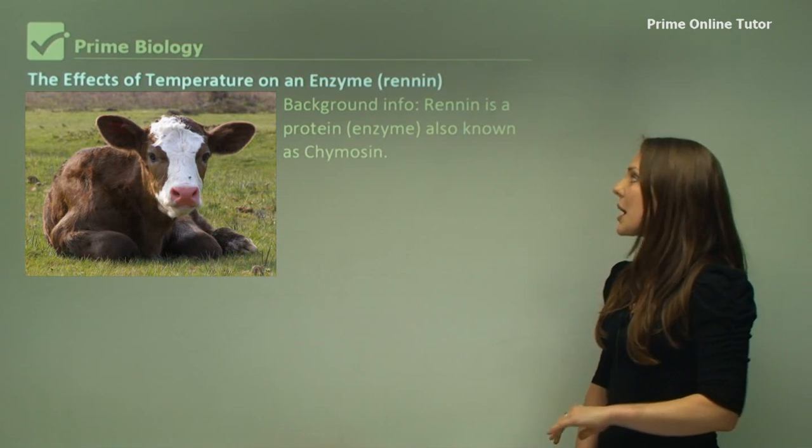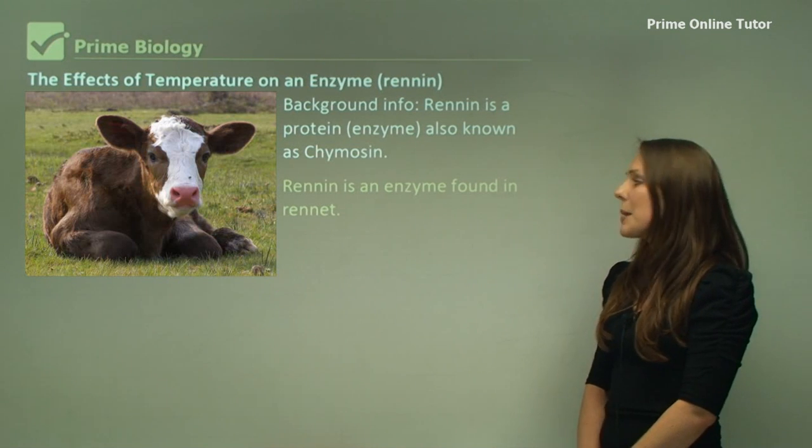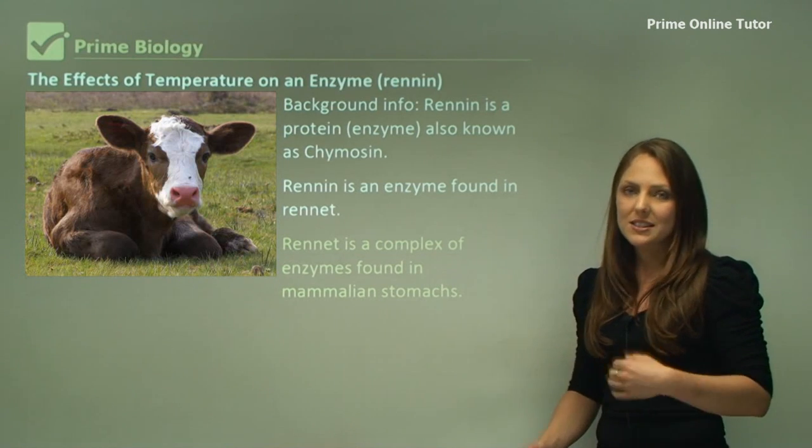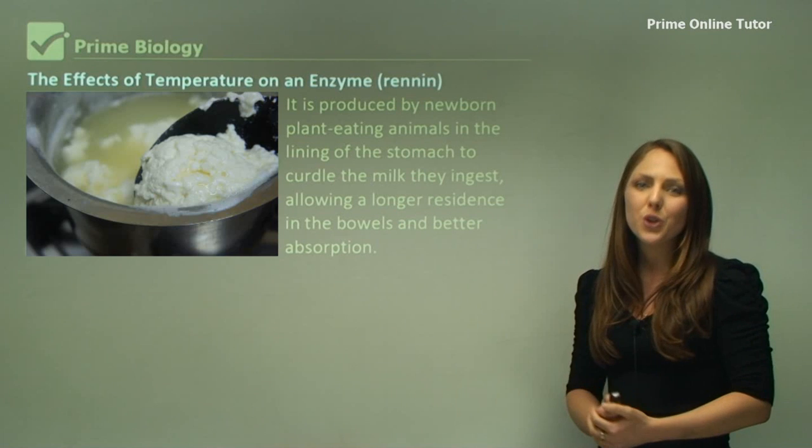The background information about rennin: rennin is a protein or an enzyme that is also known as chymosin. Rennin is an enzyme found in rennet, which is a complex of enzymes found in mammalian stomachs.